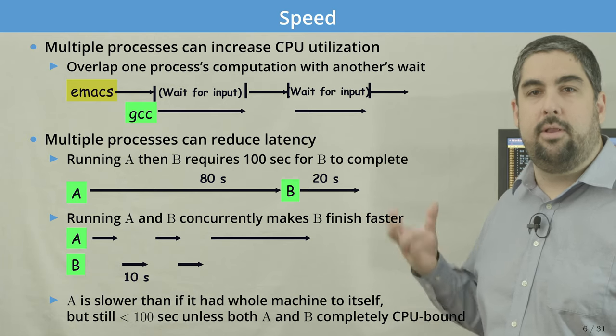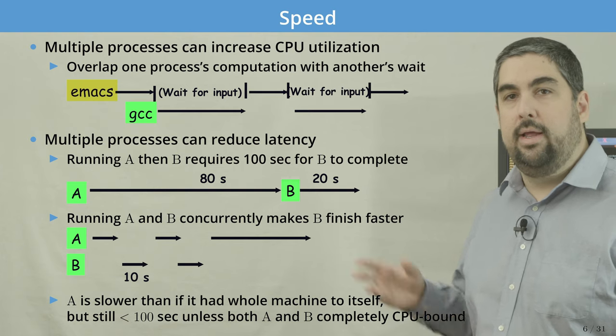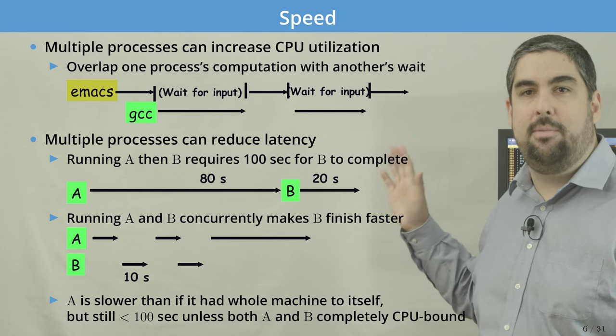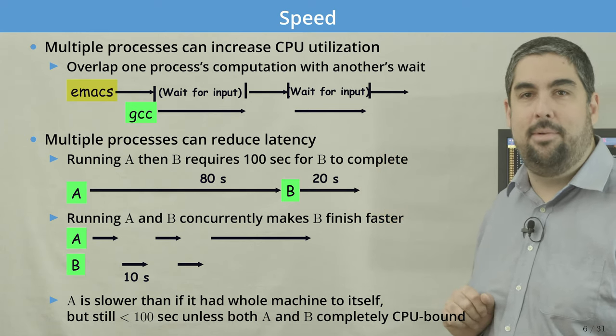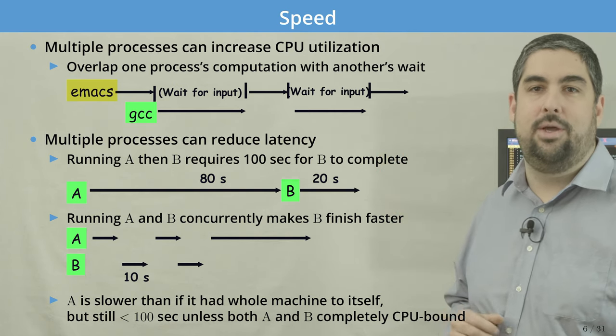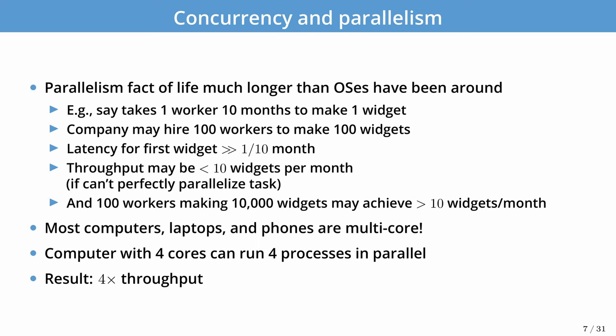The process abstraction is key to a lot of what the OS provides. In the example, A still took more than 80 seconds — we didn't cheat the system with only one processor — but we made the perception to the user that each task executes with lower latency. Additionally, processes can achieve parallelism: with four to eight cores on a modern laptop, we can place different processes onto different cores to execute in parallel, completing multiple processes simultaneously for higher performance.